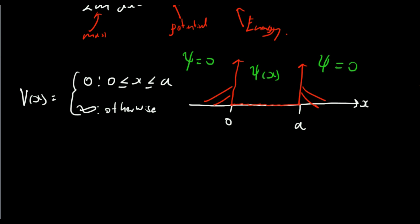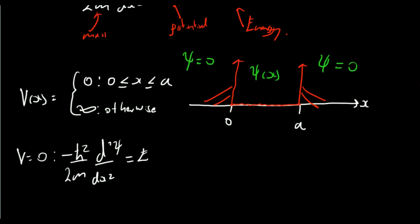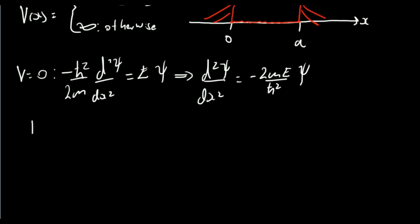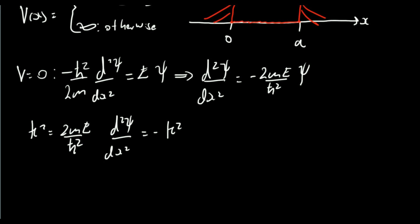Given that our particle is confined to the region between zero and a, we'd like to solve the Schrödinger equation for this region. We know that V is equal to zero, so we can simplify: minus h bar squared over 2m times d2 psi by dx squared equals the energy times psi. Rearranging: d2 psi by dx squared equals minus 2mE over h bar squared times psi. We define k squared as 2mE over h bar squared, giving d2 psi by dx squared equals minus k squared psi.